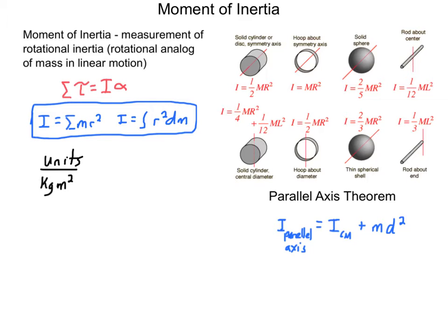Moment of inertia is found by adding up all of the masses and multiplying them by the distance away from the axis of rotation squared. For a bunch of point masses, you add up each point mass times the distance away squared. For a continuous object — a rod, sphere, or something else — you use the integral of r squared dm, where dm is each infinitesimal mass chunk at some distance away. Units are kilograms times meters squared — be careful, that's not a per, because it's not divided by.